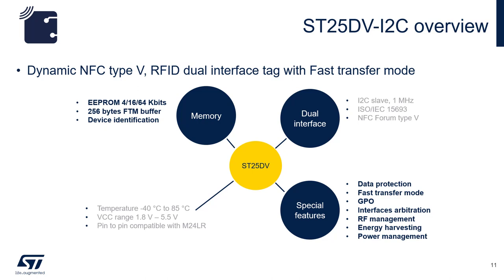All SD25DV devices have a 256-byte fast transfer mode buffer. There are also special features such as energy harvesting, power management, interface arbitration, and GPIO, which is a configurable GPIO for different trigger-on events. Temperature ranges from -40 degrees Celsius to 85 degrees Celsius.